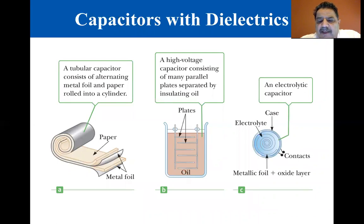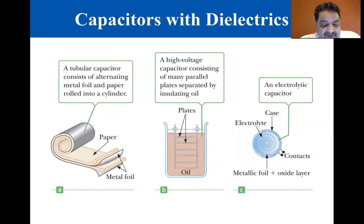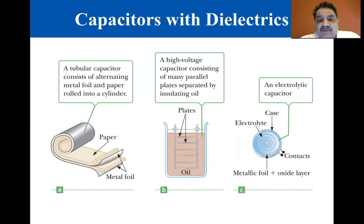Commercial capacitors are often made by using metal foil interlaced with thin sheets of paraffin impregnated paper or mylar, which serves as a dielectric material. Alternating layers of metal foil and dielectric are rolled into small cylinders, as you can see in the figure on the left. One type of high voltage capacitor consists of a number of interwoven metal plates immersed in silicon oil, as shown in the middle figure.